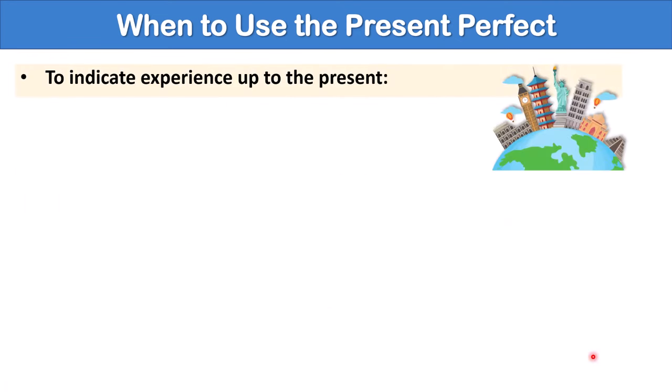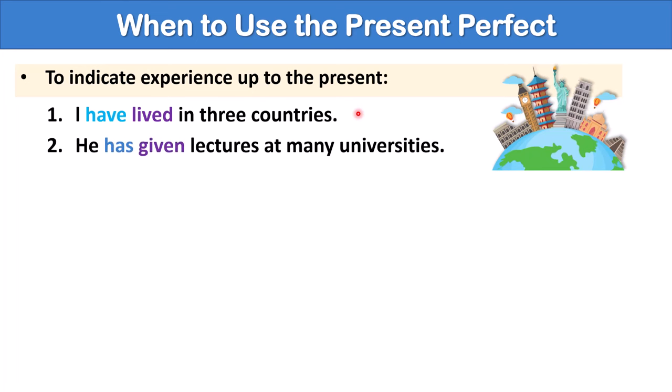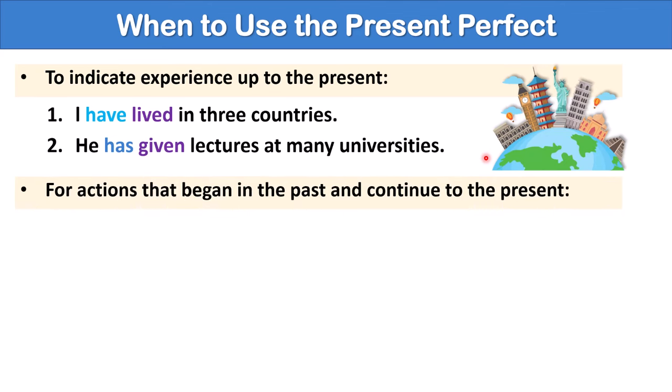Another use of the present perfect is to indicate experience up to the present. When you're talking about things you have done in your life. For example, I have lived in three countries. I'm not specifying when I lived in these countries, but in my lifetime I have lived in three countries. He has given lectures at many universities.